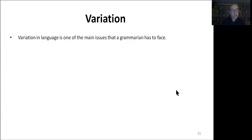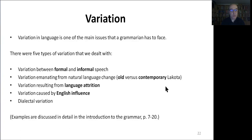Variation in language is one of the main issues that a grammarian has to face and deal with. Some of the types of variation that we dealt with are variations between formal and informal Lakota, variations between older and contemporary Lakota, variation resulting from language attrition, variation caused by English influence, and dialectal variations.